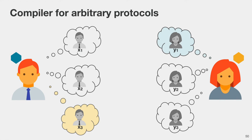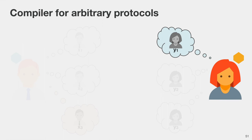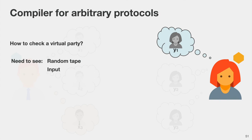The idea is again to use oblivious transfer to check some subset of these virtual party simulations. For example, Bob checks the first virtual party and Alice checks the last virtual party of Bob. Since Alice doesn't know which virtual party Bob checks, we can detect misbehavior with probability one-third. To check a virtual party, Bob needs the random tape for that party, the party's input, and to see all incoming and outgoing messages of that party. The input and random tape are handled via oblivious transfer, as before.